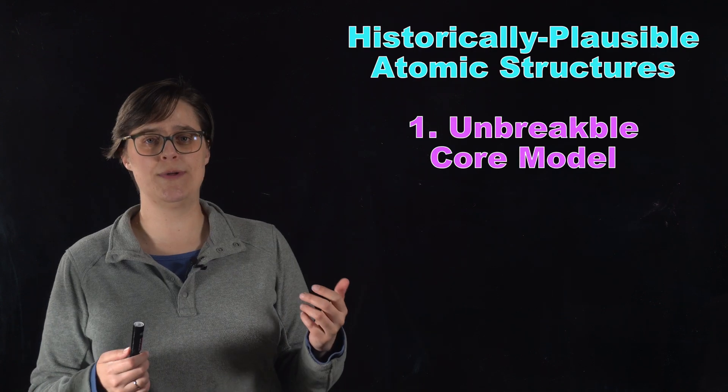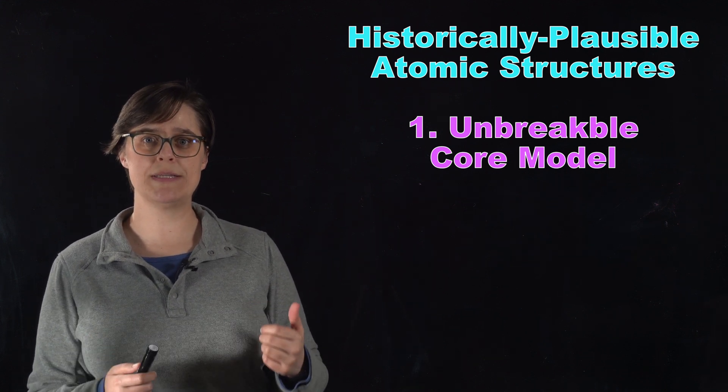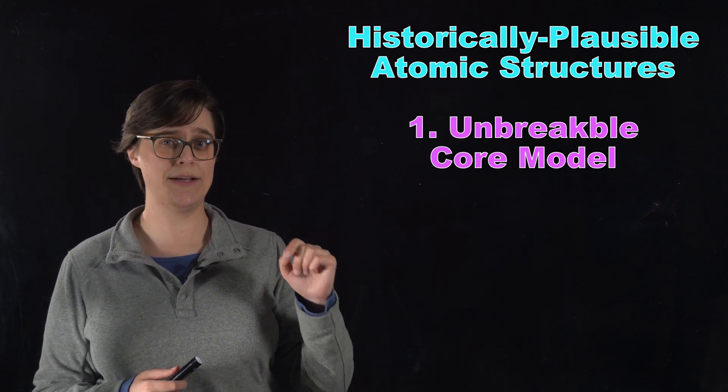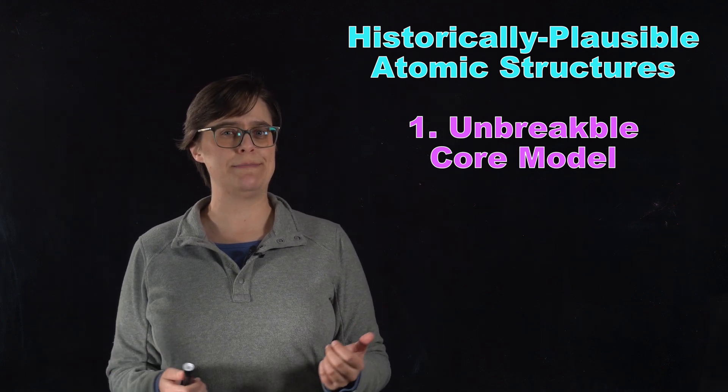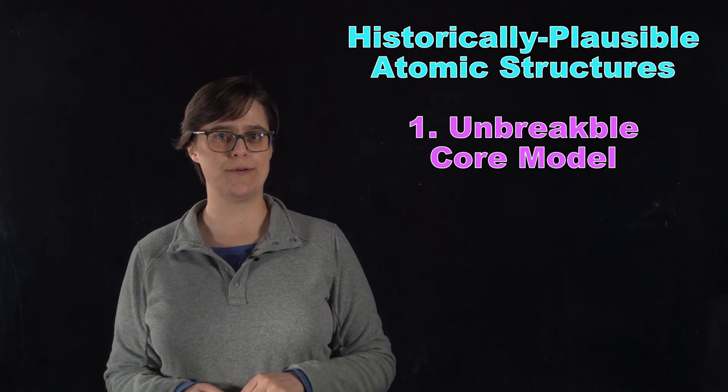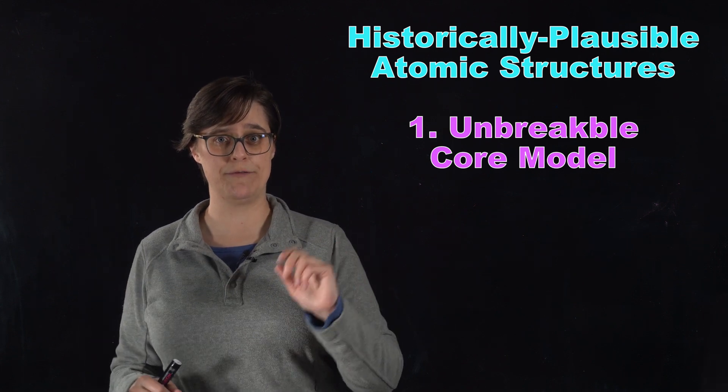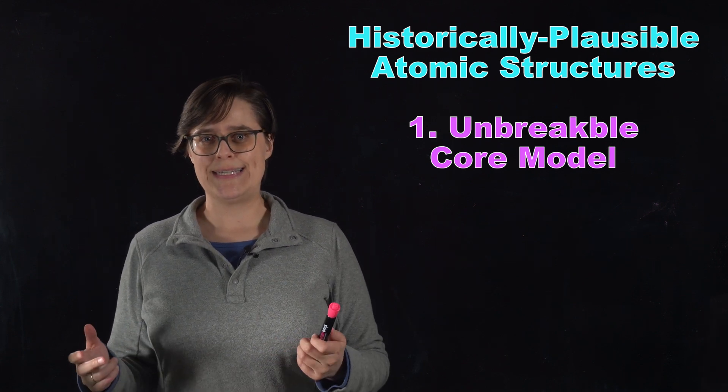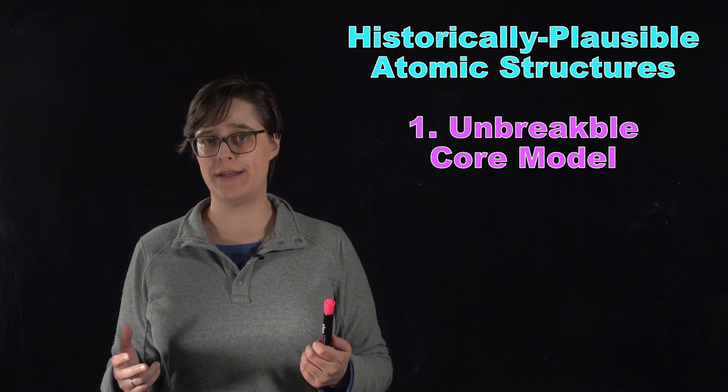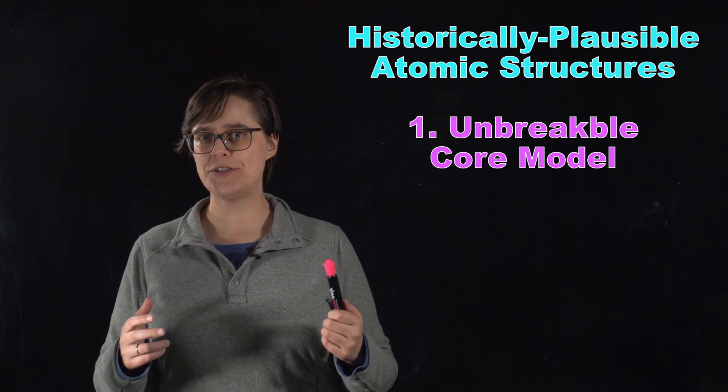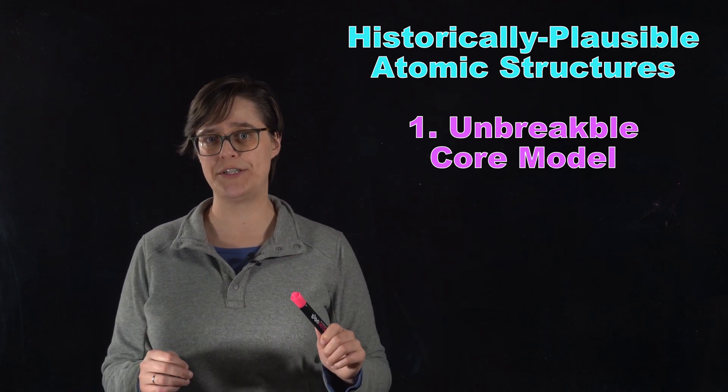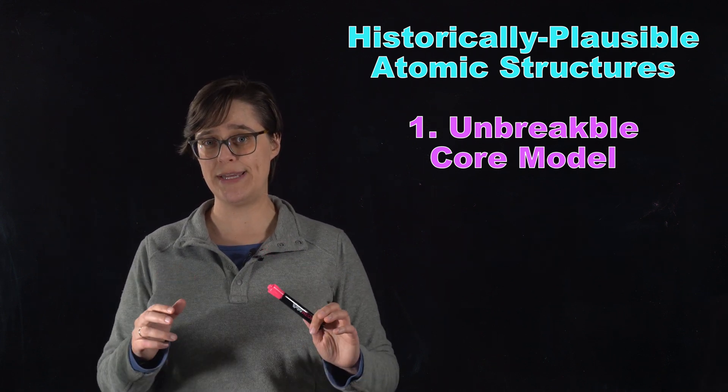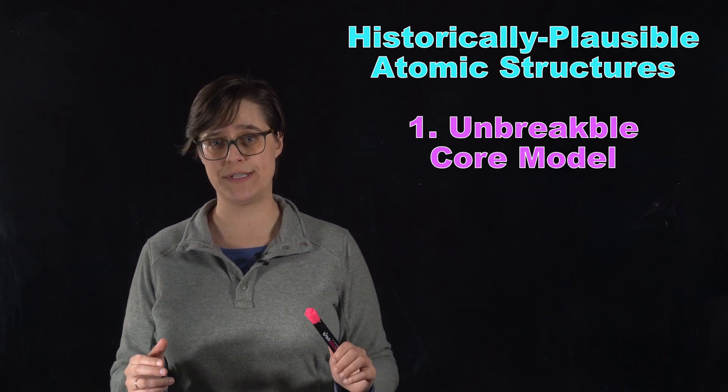First is what I'm going to call the unbreakable core model inspired by Lavoisier and Democritus of ancient Greece. Maybe matter is made of tiny indivisible particles. Let's call them atoms after Democritus's idea. These atoms cannot be created or destroyed, only rearranged. Each type of substance has its own unique atom, differing in shape and size, which explains the diversity of materials in the universe.